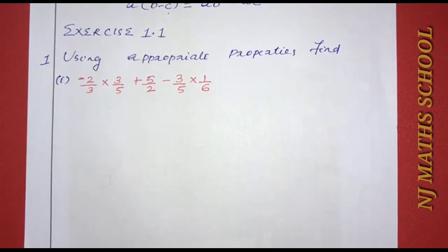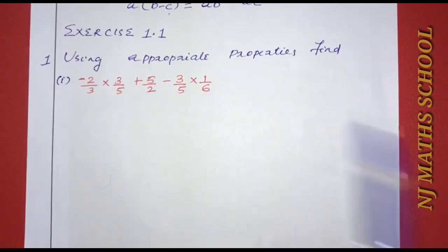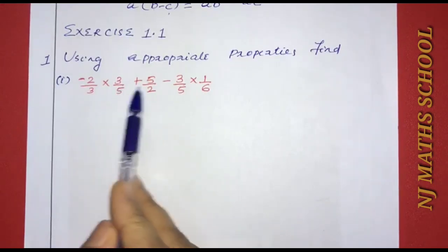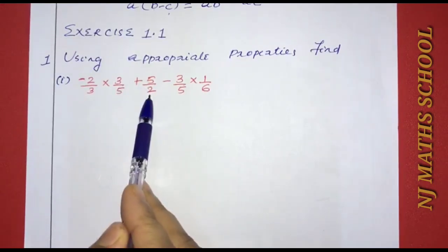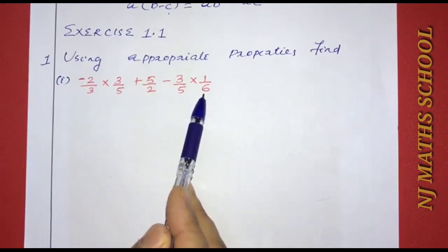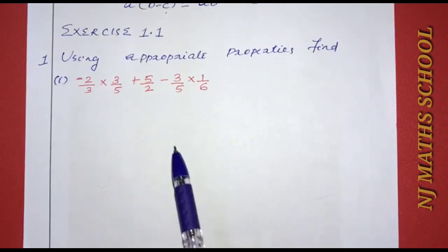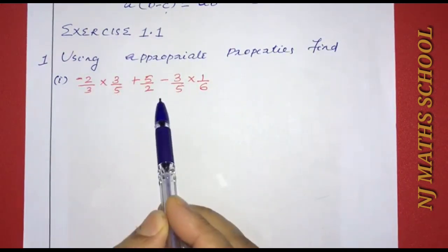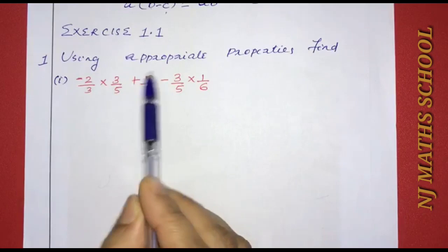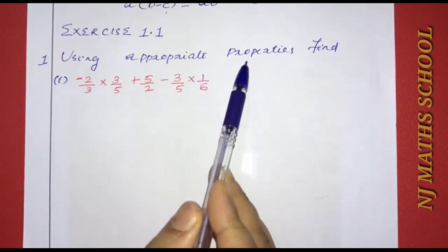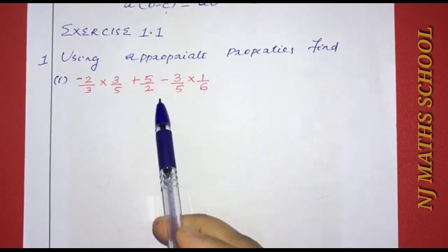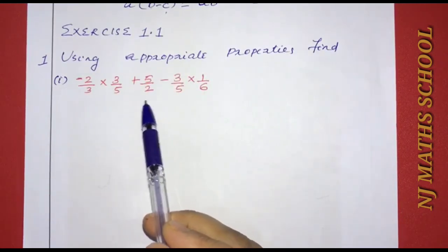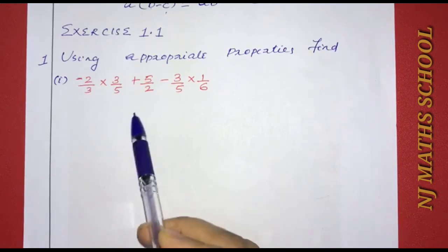The first question: using appropriate properties, find minus 2 by 3 into 3 by 5 plus 5 by 2 minus 3 by 5 into 1 by 6. We will simplify using the appropriate properties.